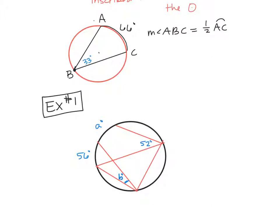If you look at angle b, it goes here to here, so what is the intercepted arc for that angle? It's the 56 — the arc between those two rays is 56 degrees. So if my arc is 56, then b is half of that 56. The intercepted arc is twice as much; the angle is half of its arc. So angle b would be 28 degrees.